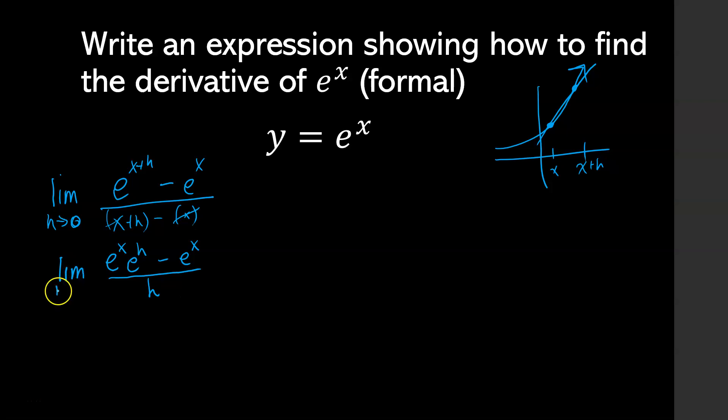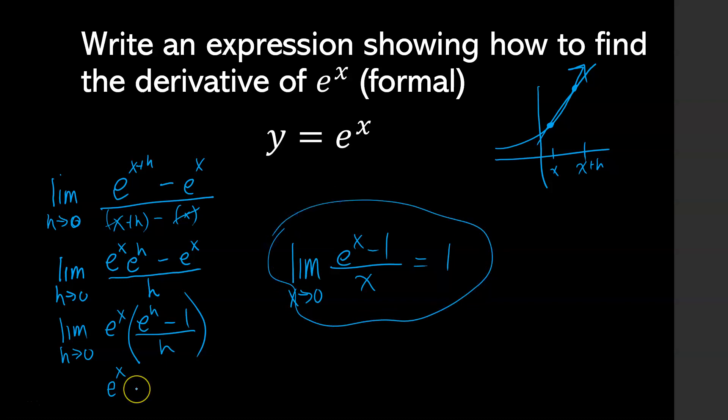Don't forget limit out front as h is still approaching zero. And the limit as h goes to zero of e to the x multiplied by e to the h minus 1 over h. Now, the limit as h goes to zero of e to the x is e to the x, since no h's are involved. And the limit that's left, h goes to zero of e to the h minus 1 over h, we actually did at the beginning. We had a slightly different form, we had x goes to zero of e to the x minus 1 over x. That was equal to 1. And so we're going to use that now.